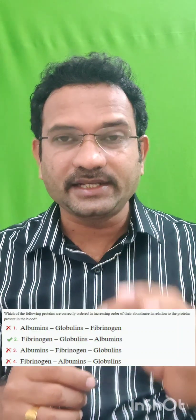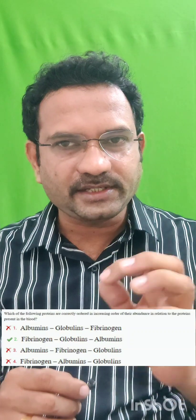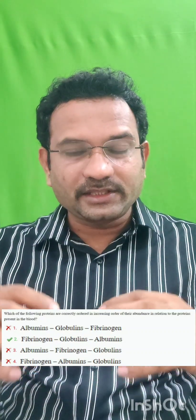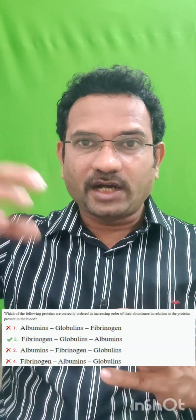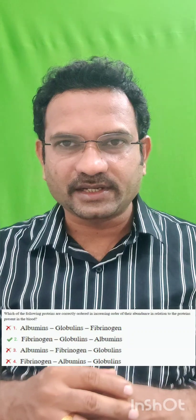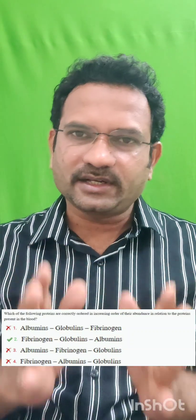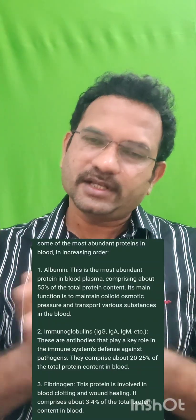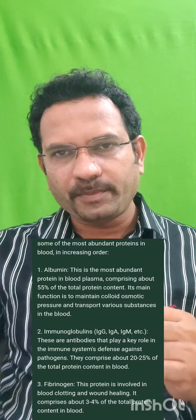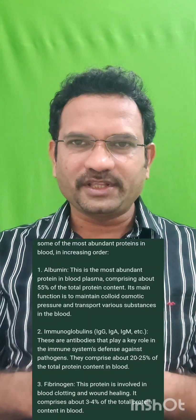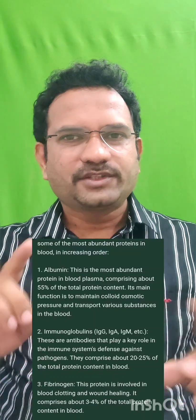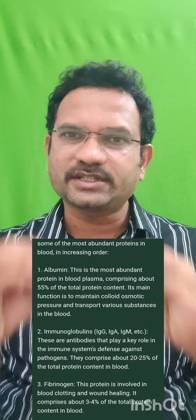There is another question related to proteins: which of the following proteins are correctly ordered in increasing order of their abundance in the blood? The abundance of this protein in blood is around 0.5%. The highest amount is Albumin — Albumin is the most highly abundant protein present in the blood. In the last option, there will be Albumin. Don't get confused about these two questions; the correct answer is clear.